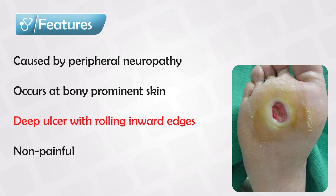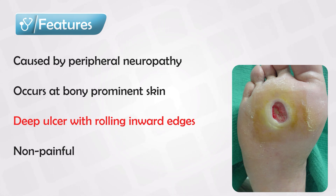Just like other pathophysiologies, once you see a neurogenic ulcer, look for other neurological signs, such as clawed toes and Charcot joints.